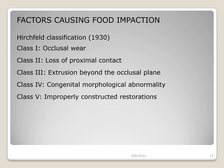Hirschfield has classified the factors causing food impaction. He gave five classes: Class 1 — food impaction due to occlusal wear, i.e., when teeth become flattened; Class 2 — loss of proximal contact, occurring when there is failure to replace a missing tooth or when there is an open contact; Class 3 — extrusion beyond the occlusal plane, when the opposite tooth is missing causing extrusion; Class 4 — congenital morphological abnormalities; Class 5 — improperly constructed restoration due to iatrogenic faults.